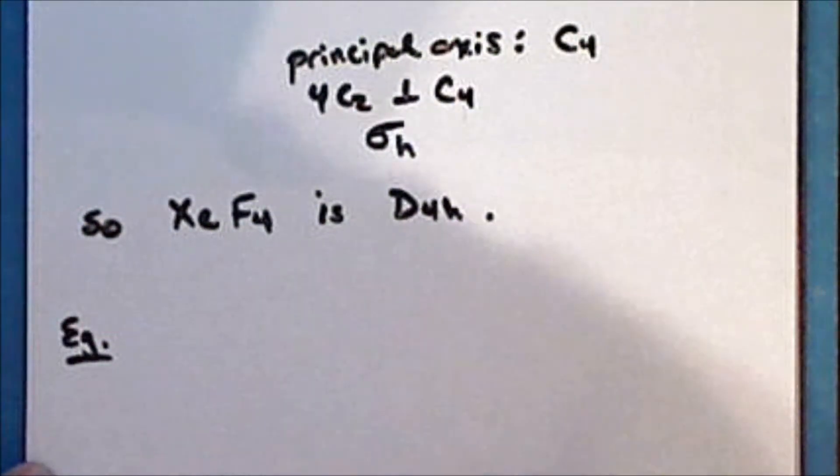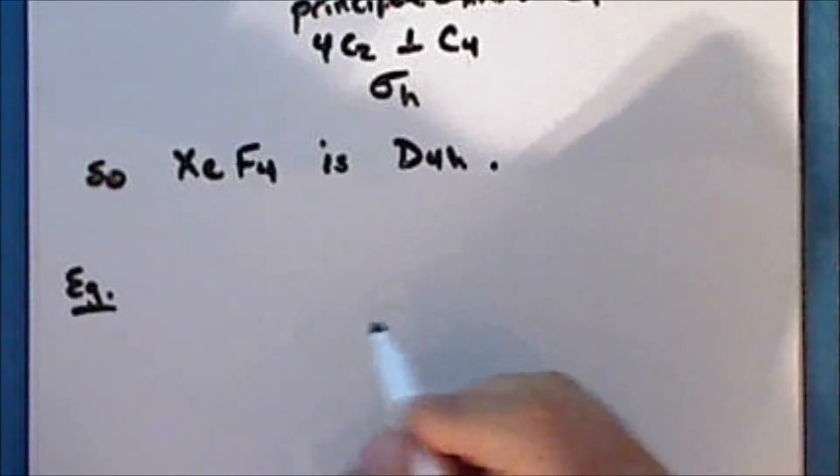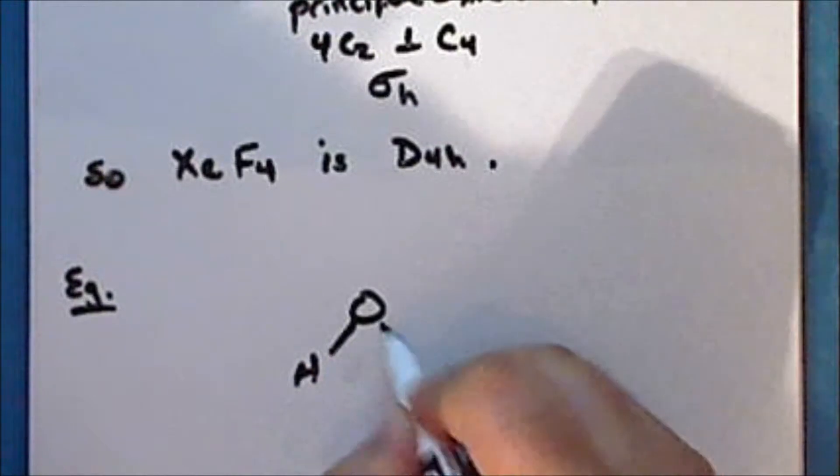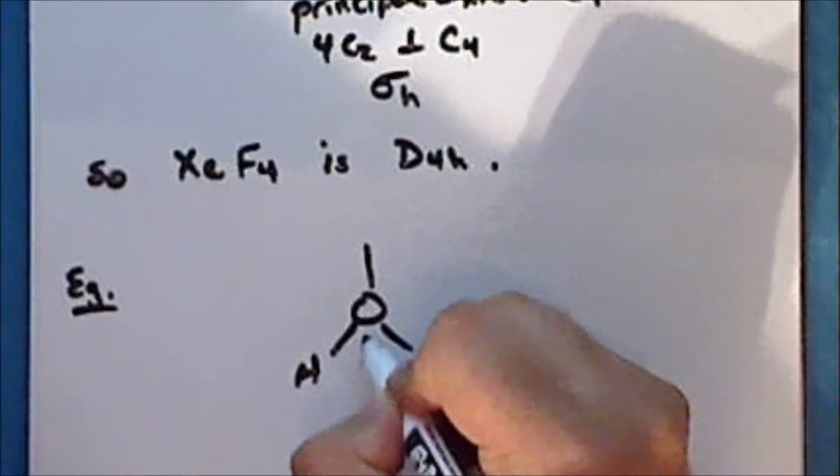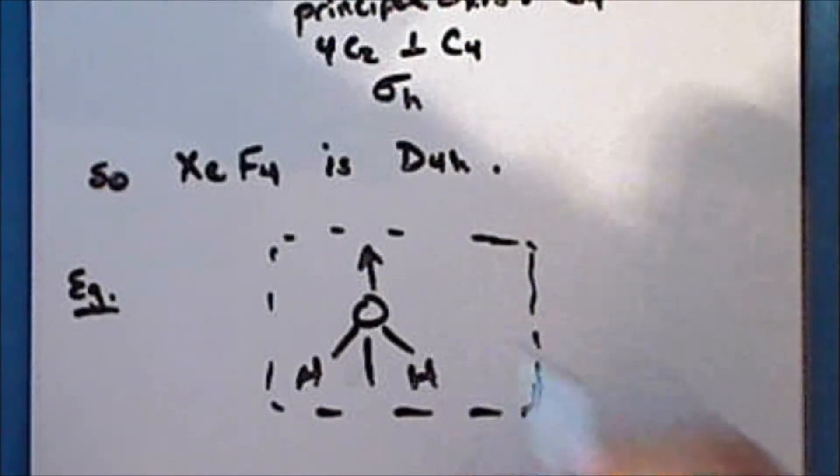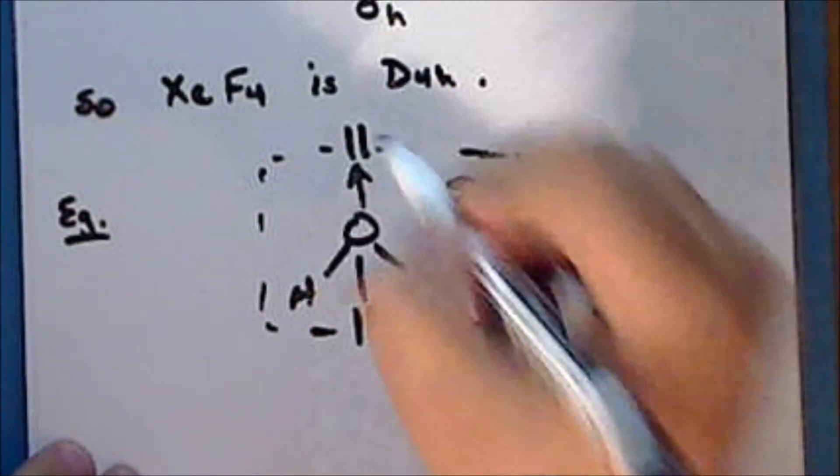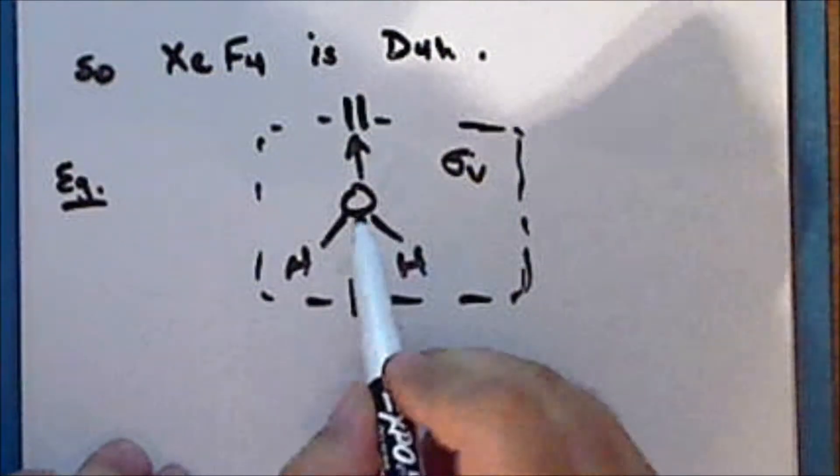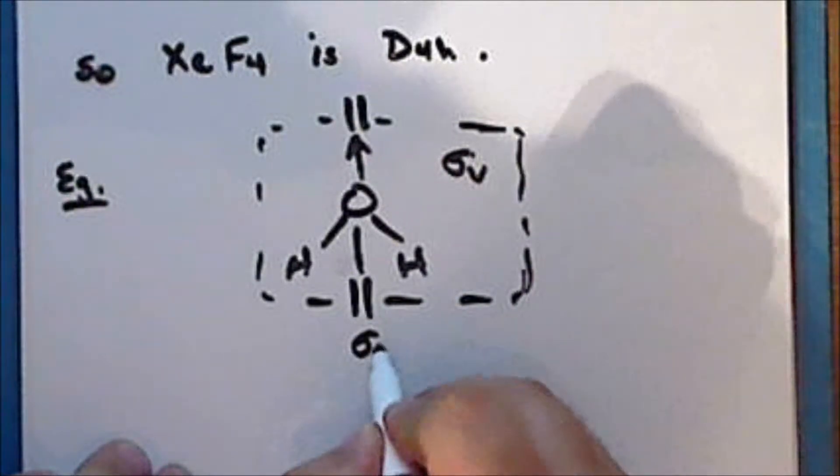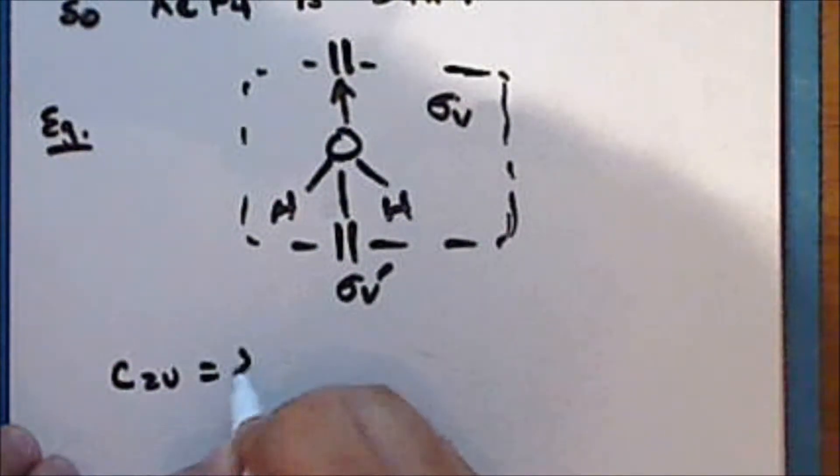So next we are to construct the Cayley table for the C2V point group. And we can use the water molecule as a representative molecule. Let's call the plane of the molecule a sigma V plane. And let's call the plane that passes through the oxygen atom perpendicular to the sigma V plane, the sigma V prime plane.